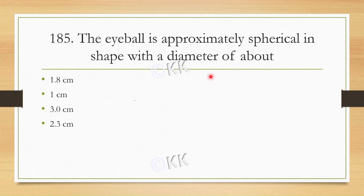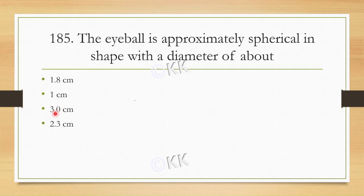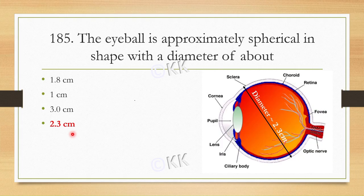Let's move to our next question. The eyeball is approximately spherical in shape with a diameter of about: Option A: 1.8 cm. Option B: 1 cm. Option C: 3.0 cm. Option D: 2.3 cm. This is a factual question asked in ESIC. The correct option is 2.3 cm.